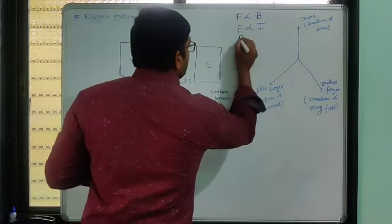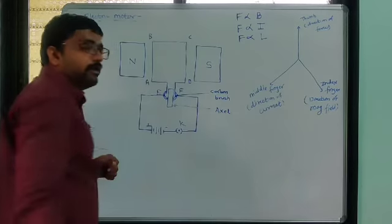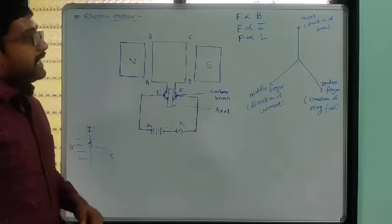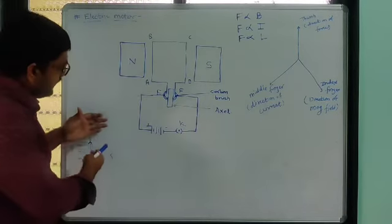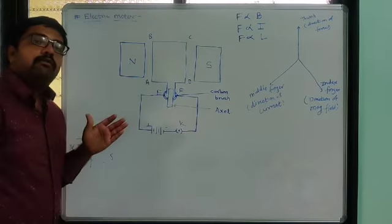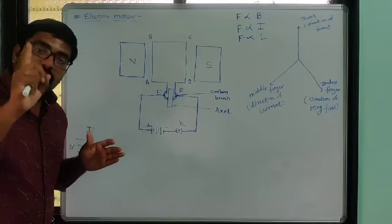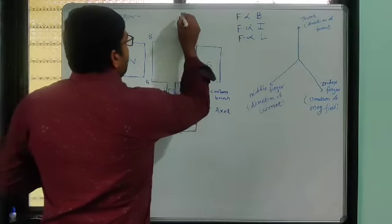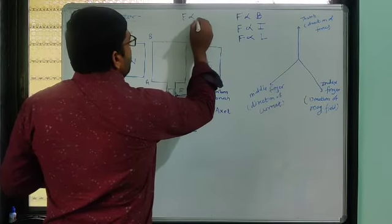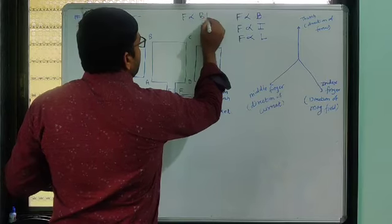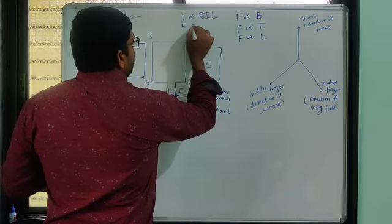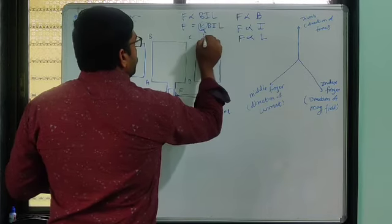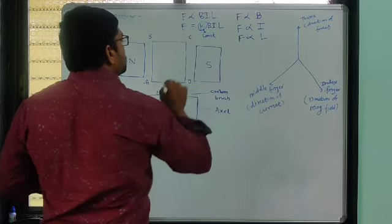That force also depends on the length of the conductor. Length of the conductor also matters — it is directly proportional, meaning if length is large then the force acting on that conductor will be large. So the force on an electric conductor depends on these three things: B, I, and L. We can write F = K × B × I × L, where K is the constant of proportionality.